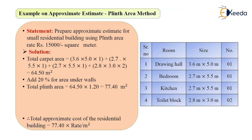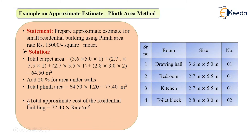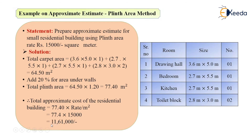Now we have calculated the plinth area. The last step is to calculate the approximate estimate, which is nothing but this area multiplied by the rate per square meter. The area is 77.40 square meters and the rate is 15,000 per square meter. Multiplying 77.40 by 15,000 gives 11,61,000 rupees. This is the total approximate cost of the residential building calculated by the plinth area method, where different room sizes were given.